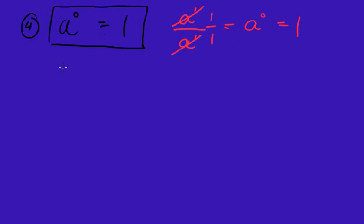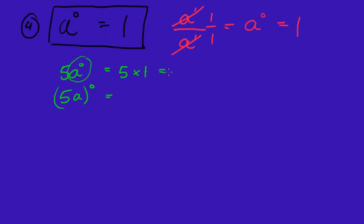Be careful with questions like 5a to the power of 0 without brackets versus (5a) to the power of 0 with brackets — these are two different questions. In the first, the power of 0 only works on the a, so we get 5 times 1 which equals 5. In the second, the power works on both, so 5 to the power of 0 times a to the power of 0 equals 1 times 1 which equals 1.